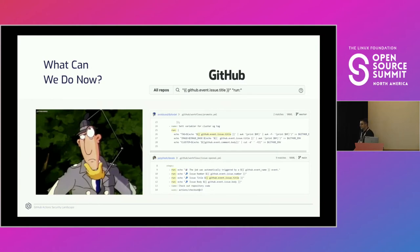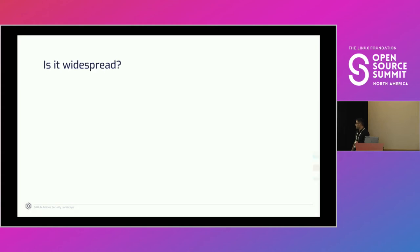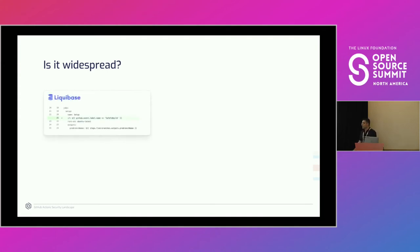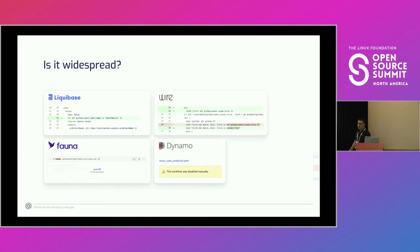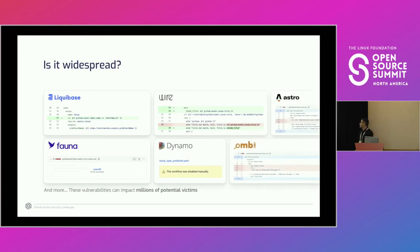We can safely say it's quite a widespread issue. We found thousands of repositories vulnerable to this code injection. Among the most popular ones: Liquibase (a popular database schema change tool), Dynamo (a visual programming tool sponsored by Autodesk), Fauna (a transactional database), Wire (an open source communication platform), Astro (a static site builder), and many more. Liquibase alone claims over 75 million downloads, so these vulnerabilities could impact millions of potential victims.